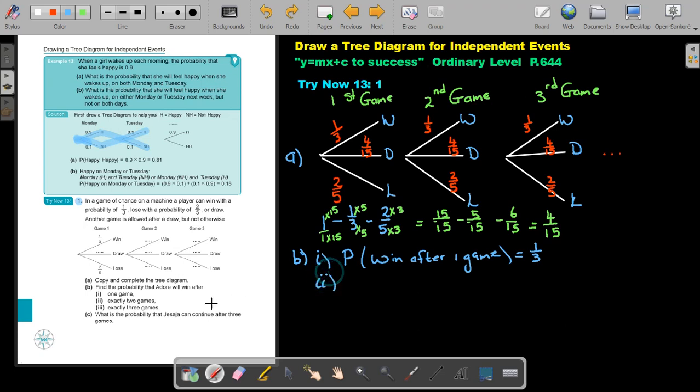The second one. Exactly two games. Now we can highlight it. You must draw and then he's going to win. It's going to be that branch. We're going to say probability win after two games, and that is going to be 4 over 15 multiply 1 over 3. If I go and multiply that, I'm going to get 4 over 45. That is going to be my answer.